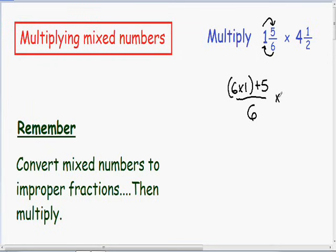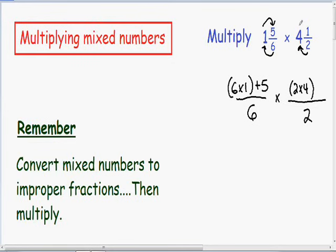And this is all being multiplied with 4 and 1/2. So let's do the same thing with this mixed number. Let's convert 4 and 1/2 into an improper fraction. Since our 4 and 1/2 has a 2 in the denominator, our improper fraction is also going to have a 2 in the denominator. And we add all that to our numerator of 1.